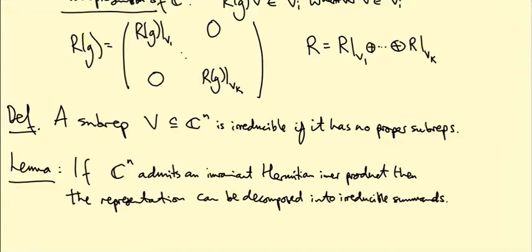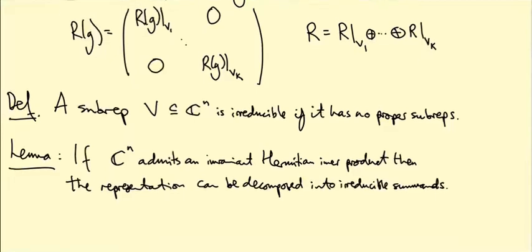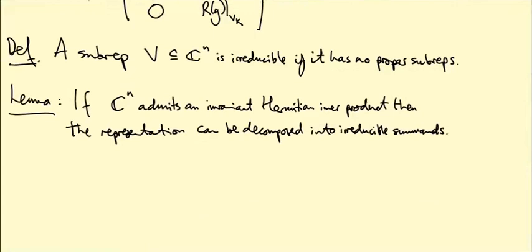We'll see that for some groups, like U(1), the unit complex numbers, any representation admits an invariant Hermitian inner product, so we can always decompose into irreducible summands for those groups. That will actually work for any compact group—any group whose matrix entries are bounded. But there are certainly examples where you don't get complete reducibility, even for very simple non-compact groups.